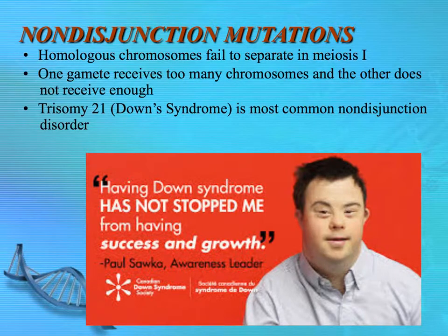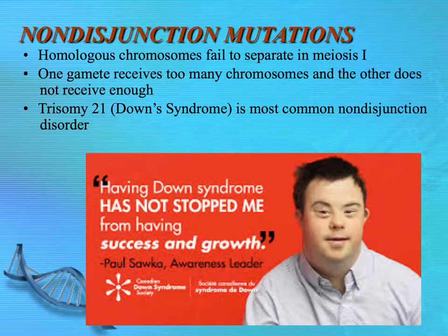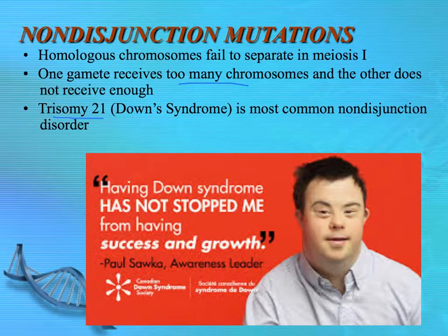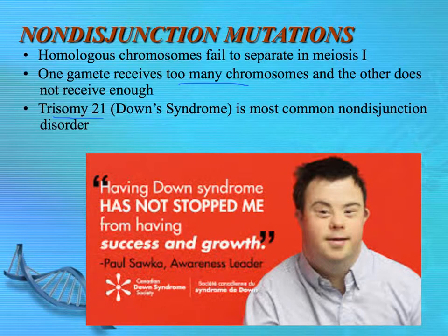Finally, non-disjunction mutations occur when chromosomes fail to actually separate — when the homologous chromosomes that are normally pulled apart in anaphase I of meiosis I do not separate, so one gamete receives too many chromosomes and the other does not receive enough. Trisomy 21, otherwise known as Down syndrome, is the most common non-disjunction disorder. There are a couple of others that lead to viable babies, but this one is the most common, and we'll be talking about Down syndrome more when we get into the next chapter on human genetics.